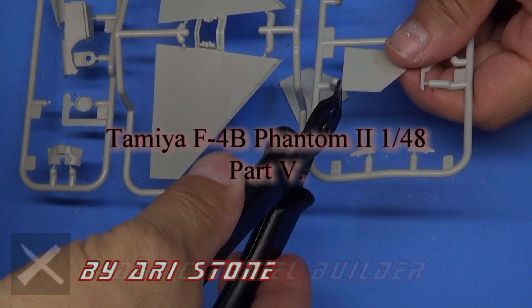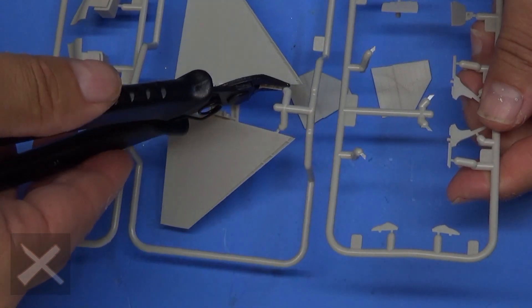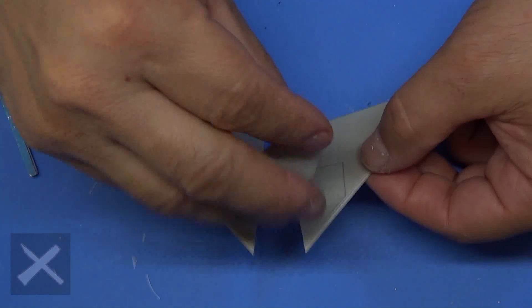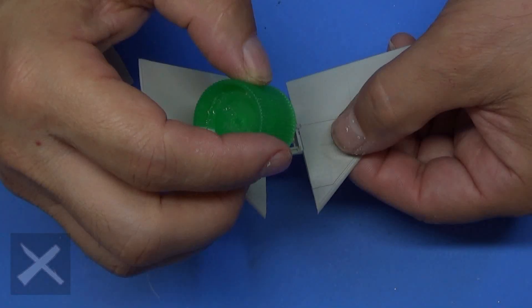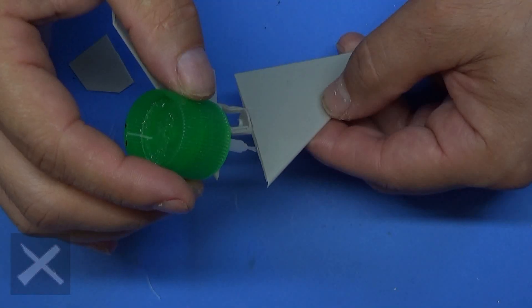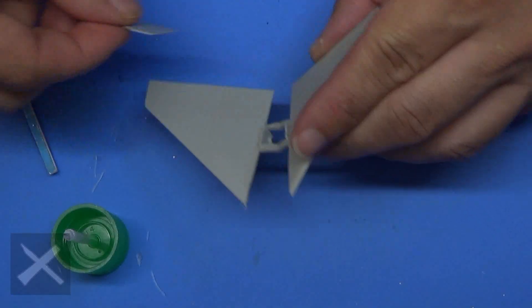Plastic Model Builders, hello. Welcome back. It is I, Ari, your host of Plastic Model Builder. This is the Tamiya F4B Phantom II 148th Scale Part 5 of my series.